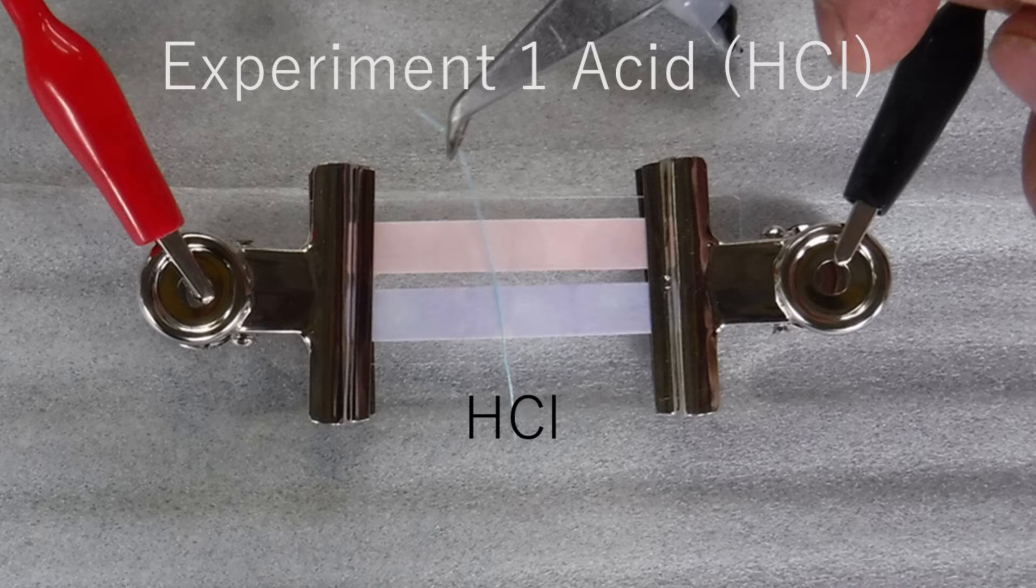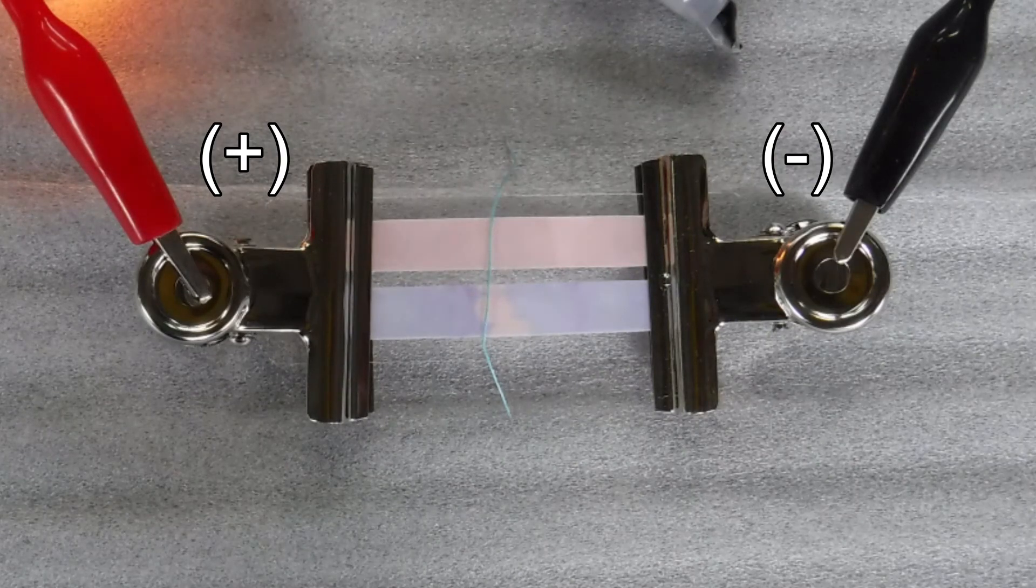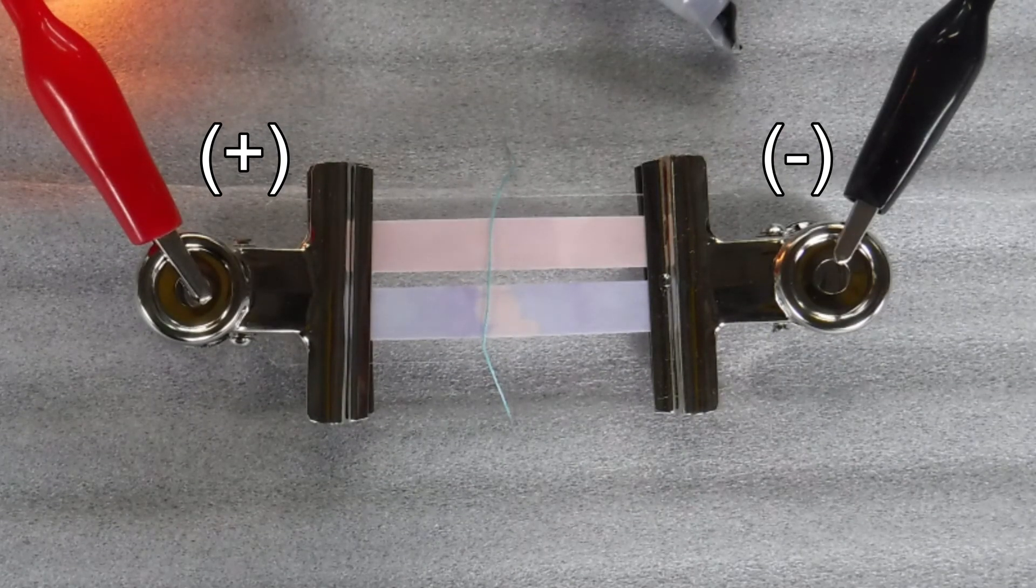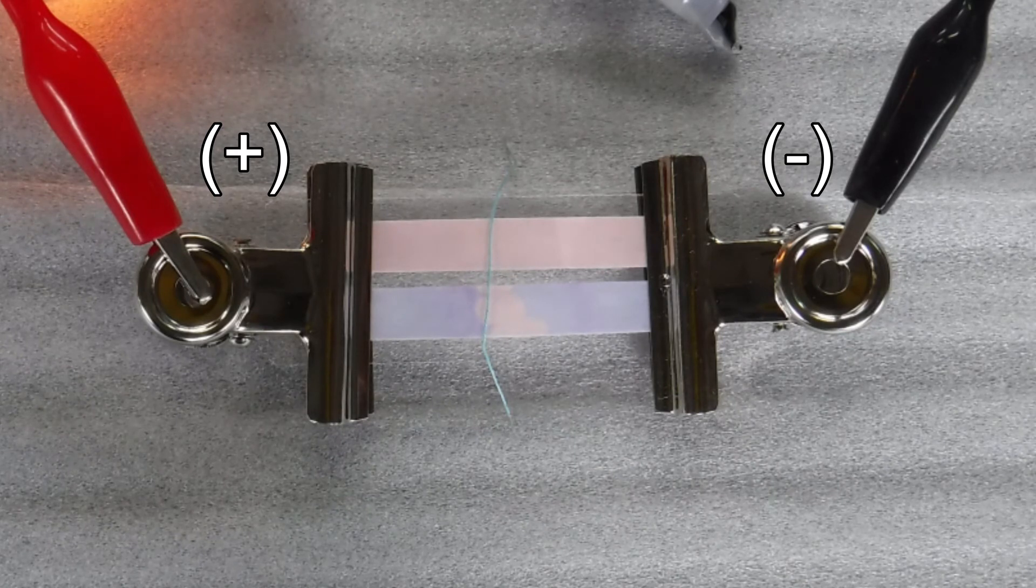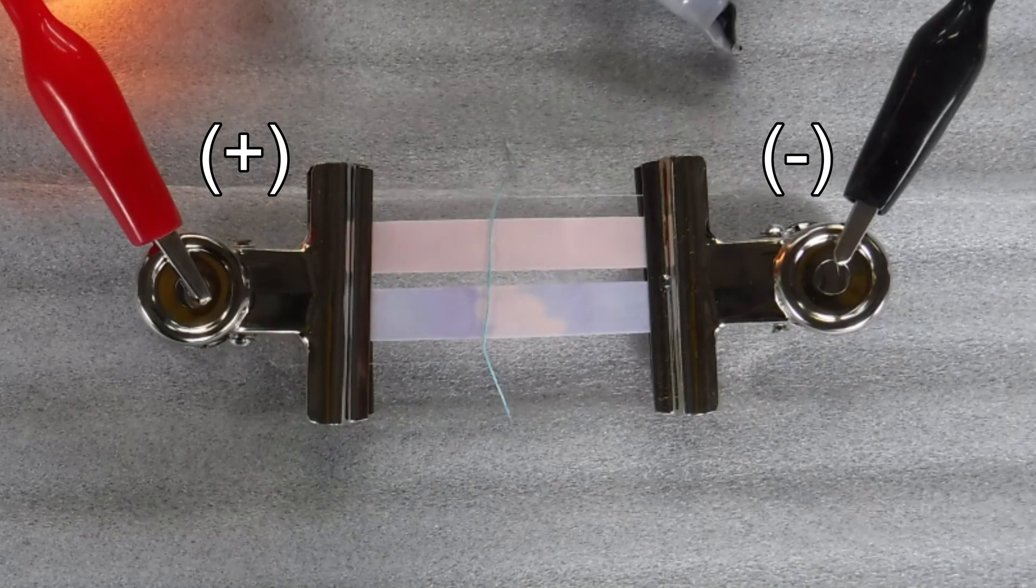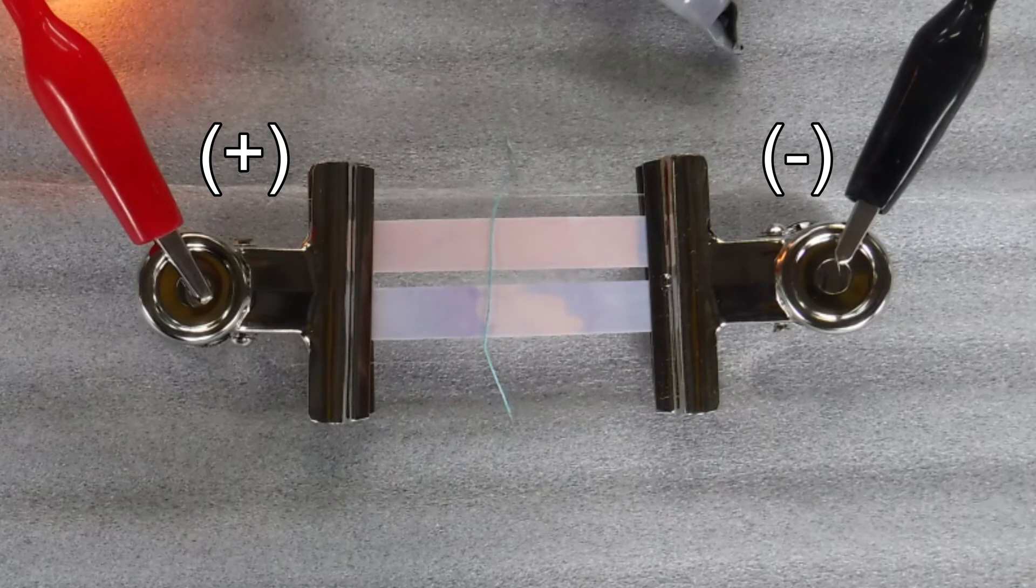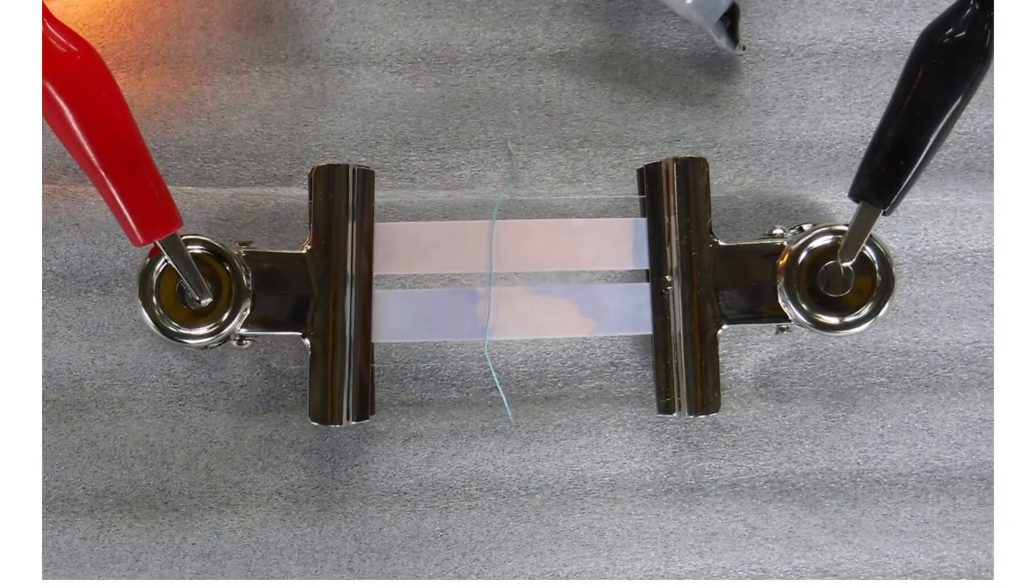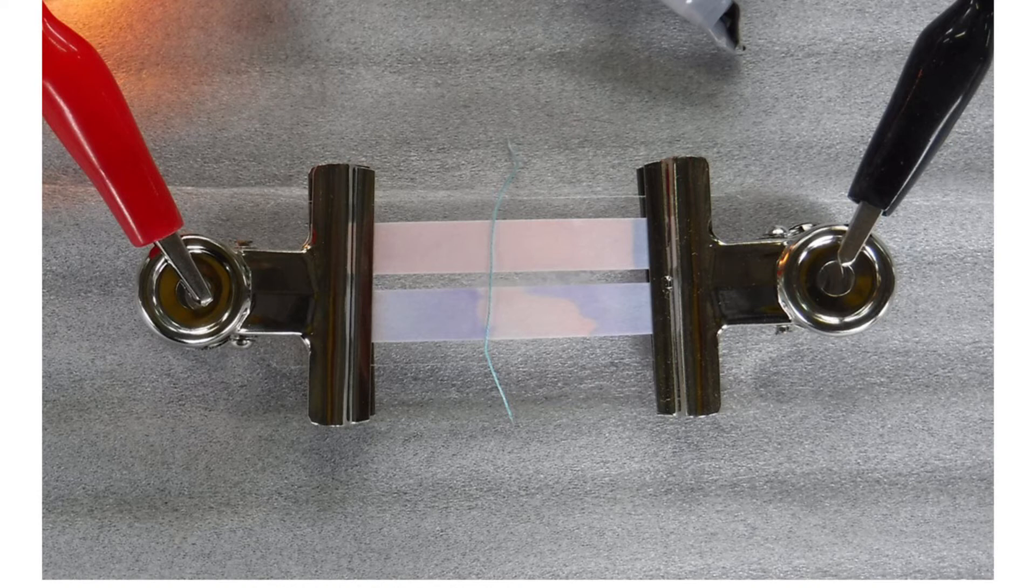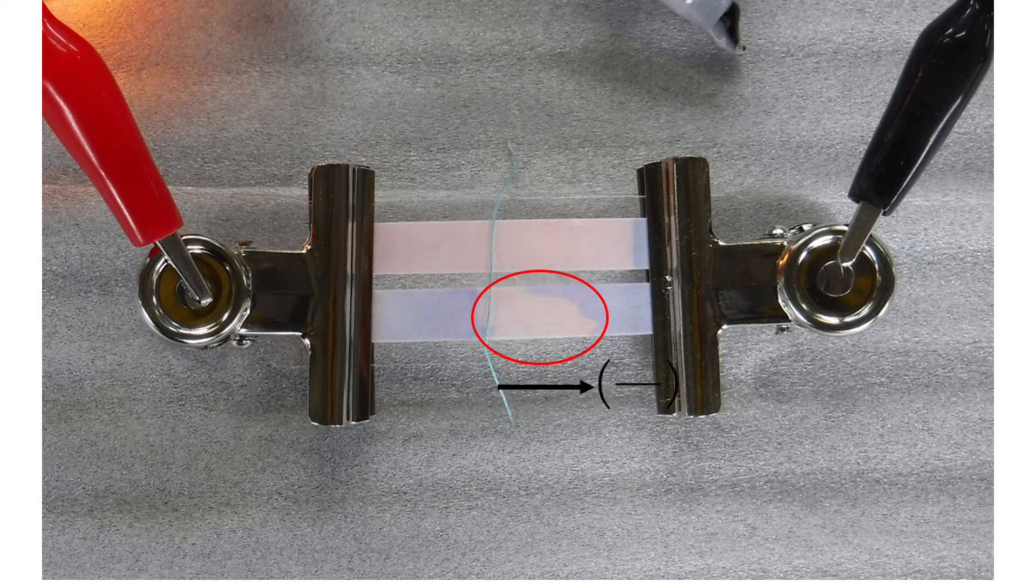A string with hydrochloric acid is placed in the middle of the paper. The experiment is started. The red part showing acidity moves to the negative electrode on blue litmus paper.